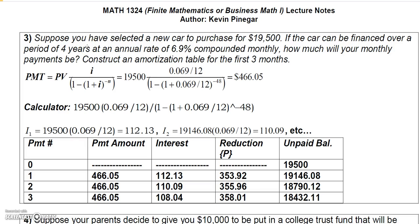Continuing in the present value annuity section, I'm going to show you how to calculate a car payment and then how to begin an amortization schedule for the car payment. Suppose you have selected a new car to purchase for nineteen thousand five hundred dollars. In this problem we're not going to make any down payment, so the amount we're going to finance is just the nineteen thousand five hundred.